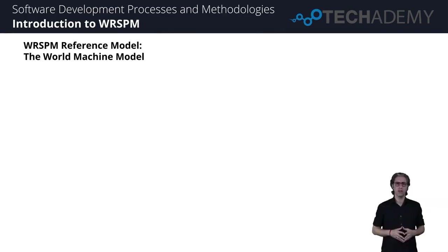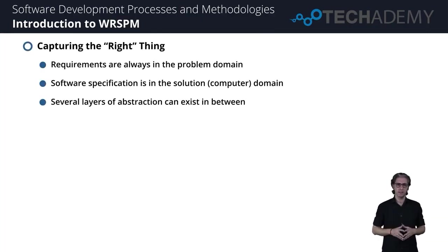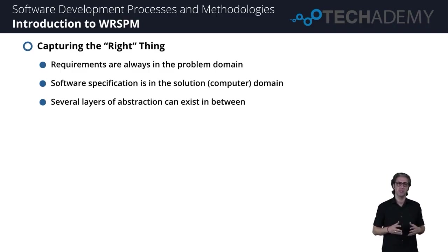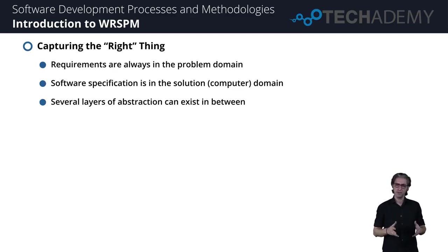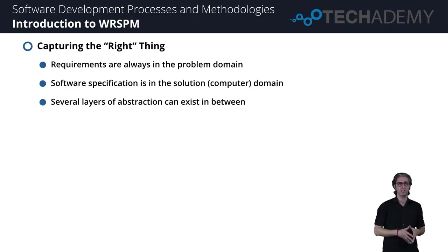Thanks a lot for watching the last video and welcome to the next session. Let us talk about the WRSPM reference model, something we call the World Machine Model. Requirements will always be present in the problem domain — it's what the user wants us to do to solve some problems they have. It is our task to understand those requirements, capture them, and then specify what software specifications we need to constrain the solution in the solution domain. With respect to abstraction, a lot of layers exist between the requirements or the user's goal and the software specifications.